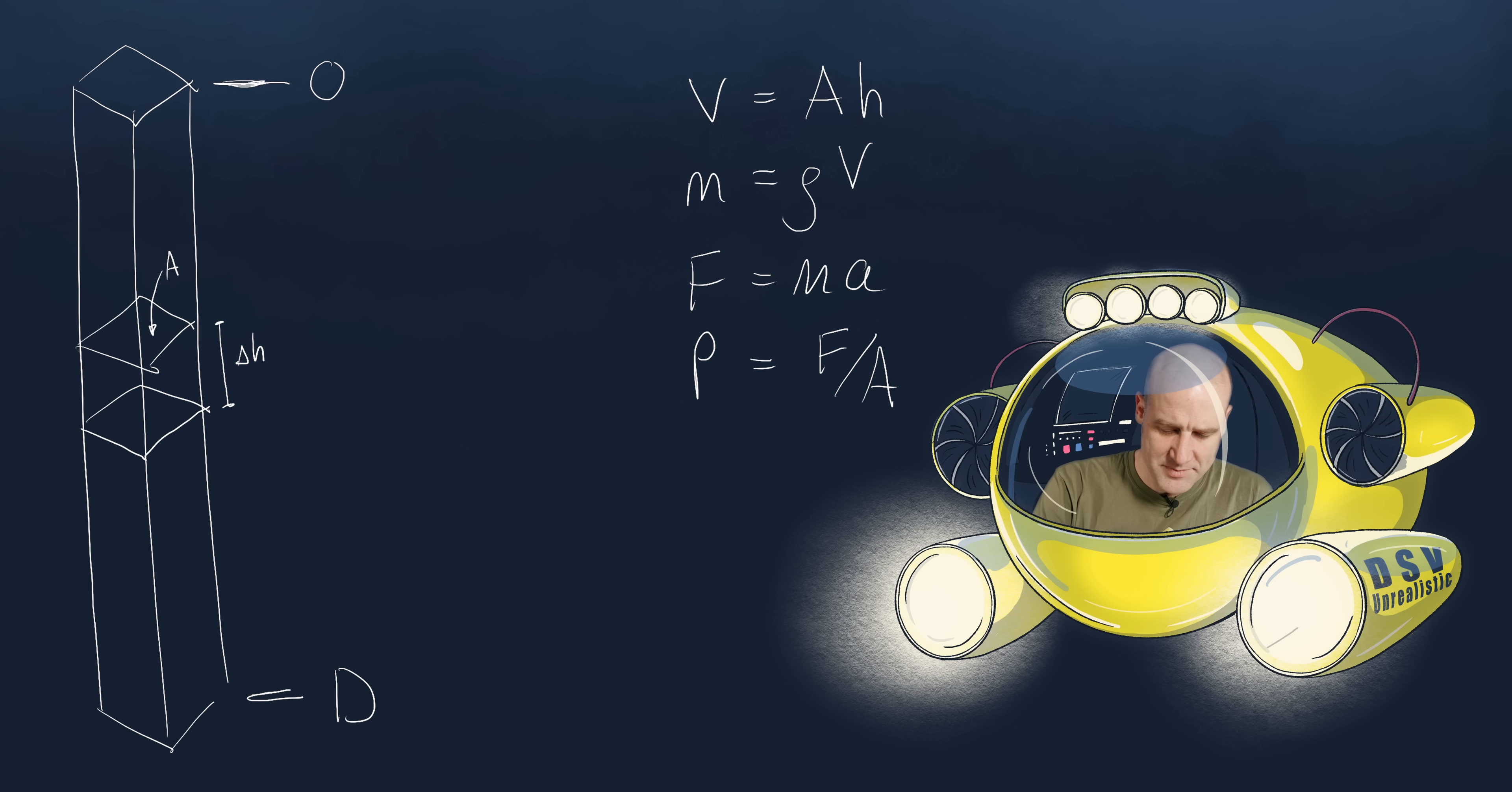So the volume of some little cuboid like that just equals the area times its height. The mass of a cube like that equals the density of whatever's in it times its volume. The force resulting from that, well force is just mass times acceleration. And pressure equals the amount of force you've got divided by the total area it's applied over.